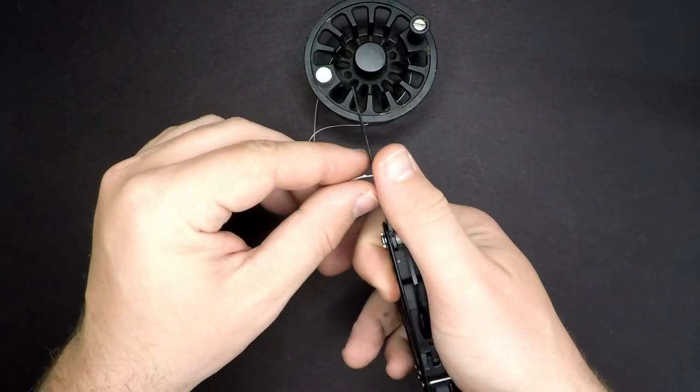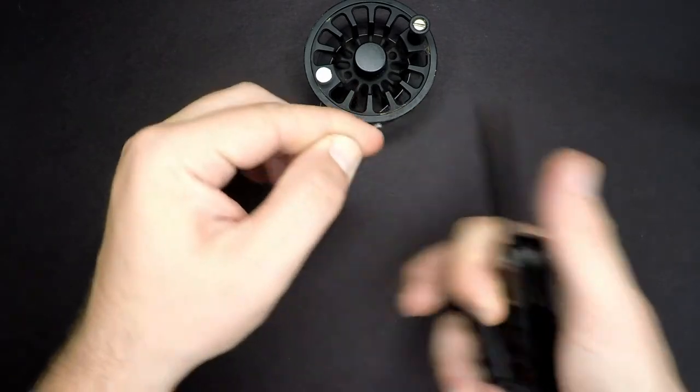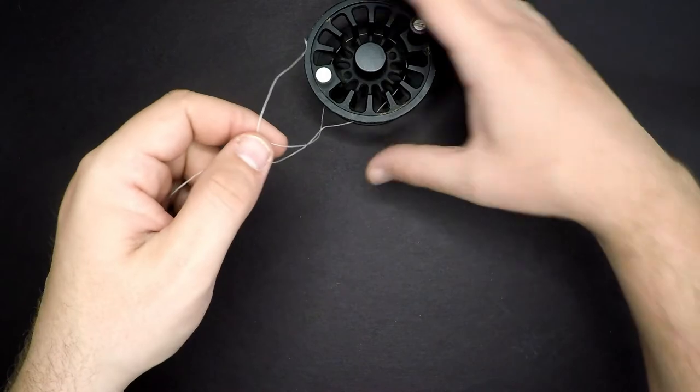And I've got some excess, so I'm going to take my knife and trim off that tag end right there above the knot. You don't want to trim it below the knot because this isn't going to work very well.